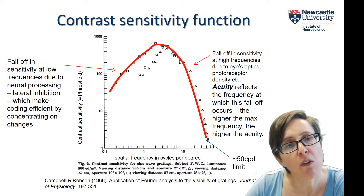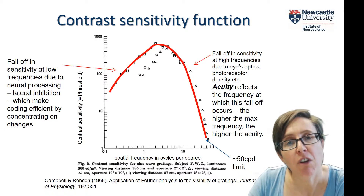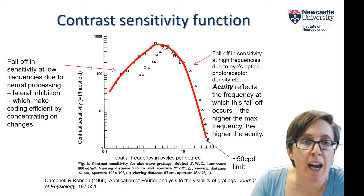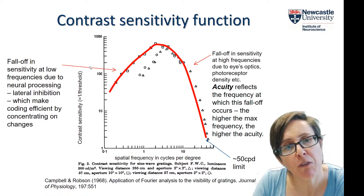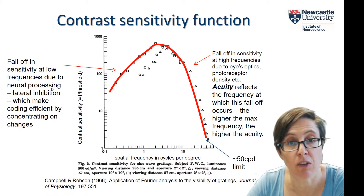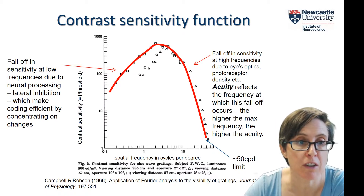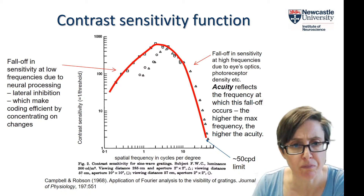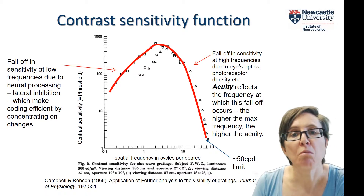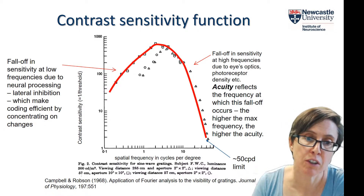The fall-off at low spatial frequencies is rather different — it might seem like there's no particular reason why that has to happen. It's believed to be due to neural processing such as lateral inhibition, the centre-surround kind of arrangement you may have already seen in the retina. The idea is that this makes our vision more efficient because it concentrates on changes.